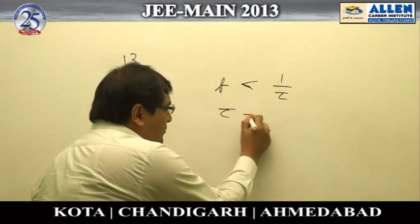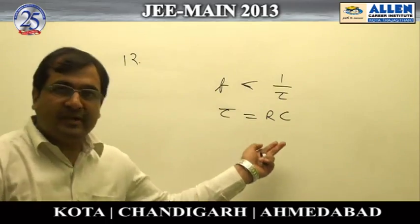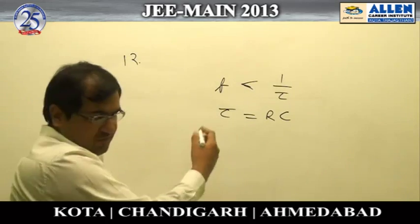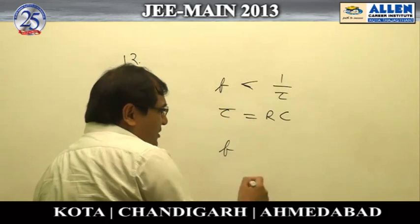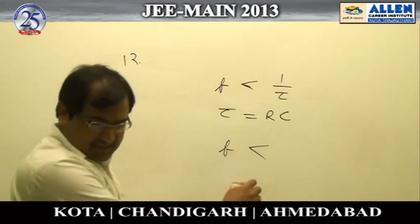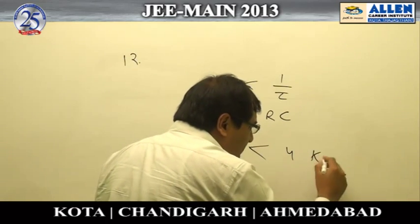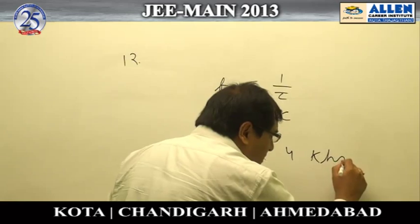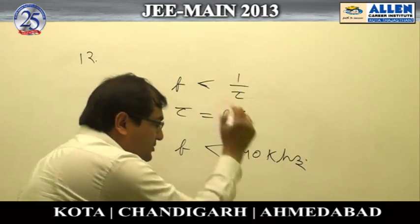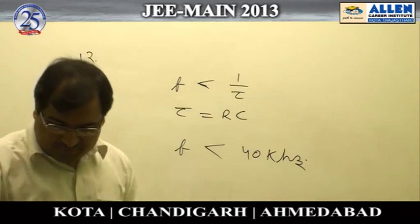The time constant τ equals RC. Calculating the value of the cutoff frequency using this, we find that the frequency should be less than 40 kilohertz.